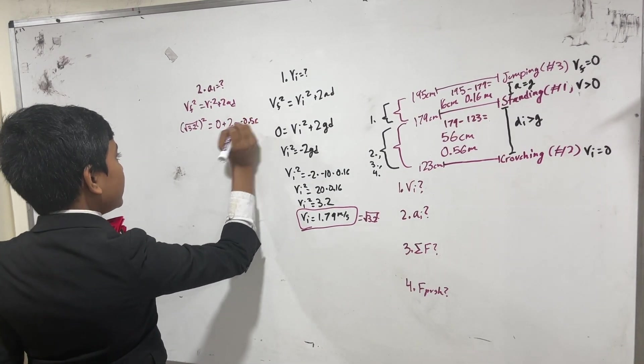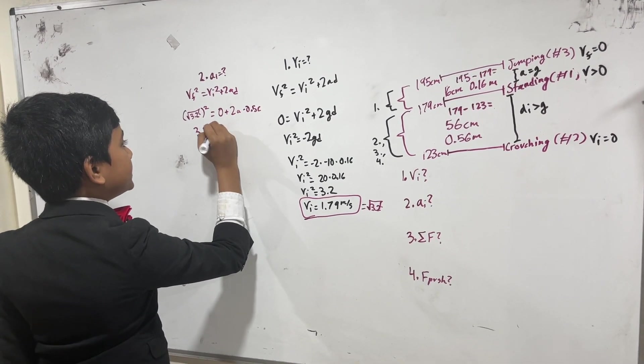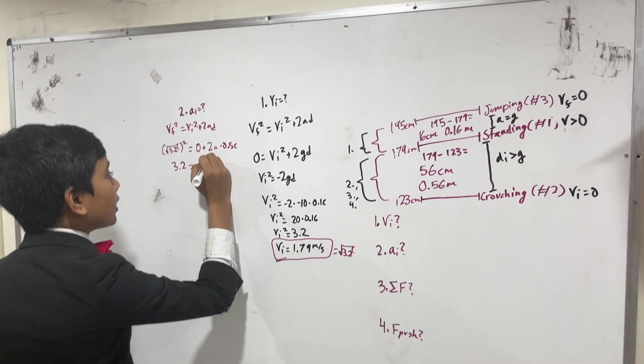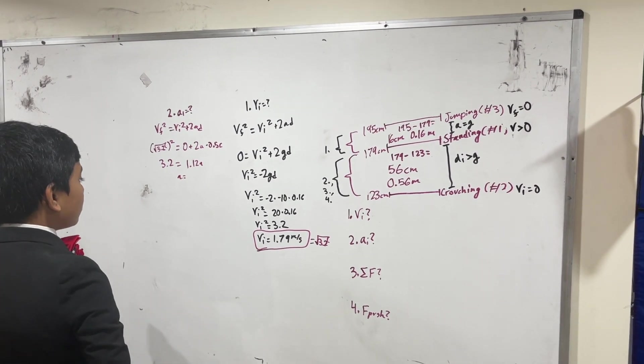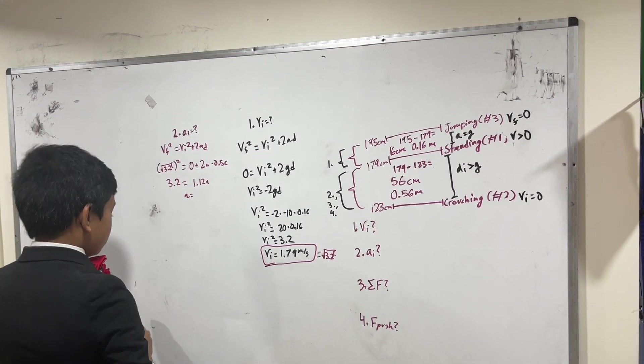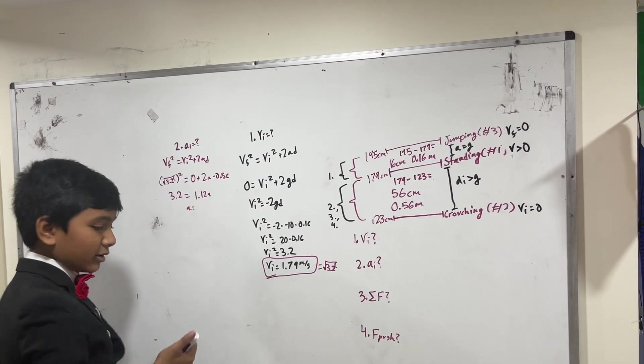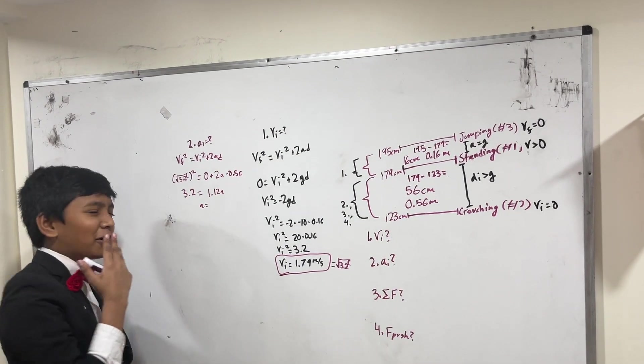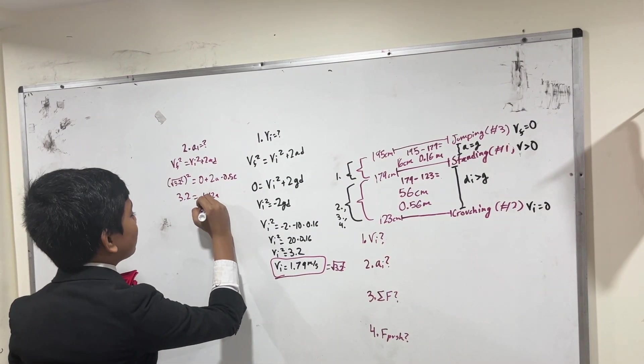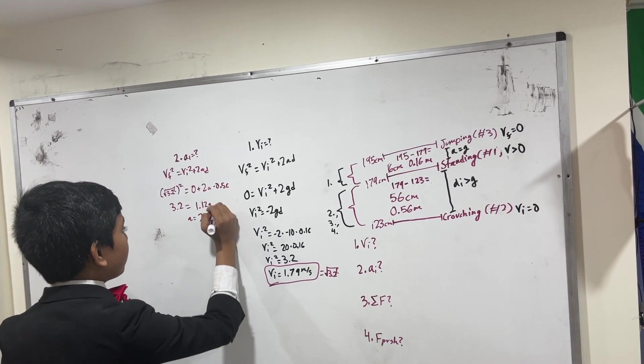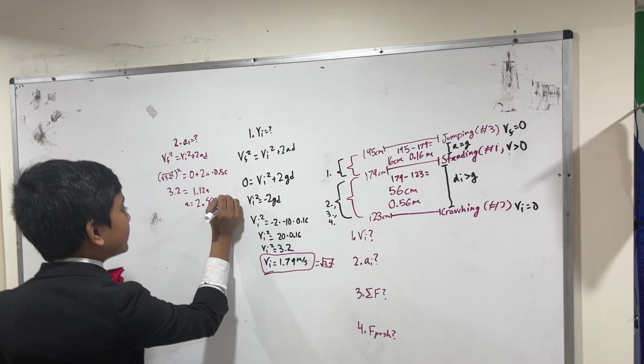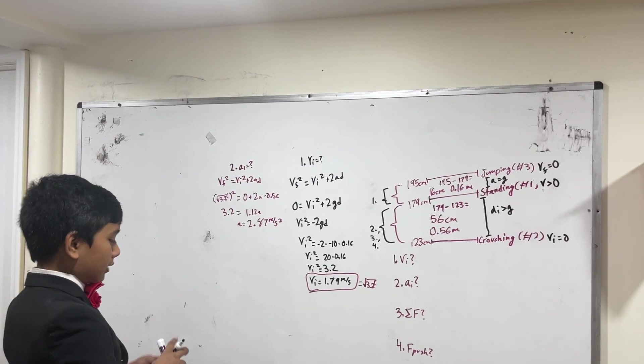We know that 3.2 is equal to 2 times 0.56 is 1.12 A. So that means A is equal to approximately 2.86, or rather, 8.7 meters per second squared.